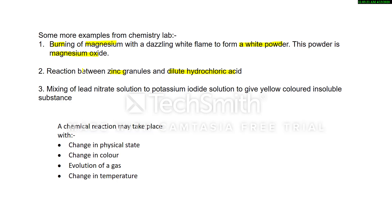The next example is mixing lead nitrate solution with potassium iodide solution. Both solutions are colorless, but when mixed we get a yellow-colored insoluble substance. This insoluble substance formed in a reaction is known as a precipitate. These are some examples of chemical reactions that may be performed in the chemistry lab in Class 10.